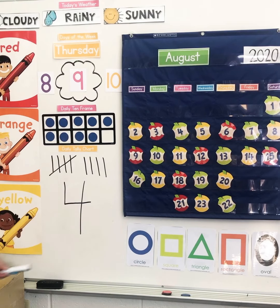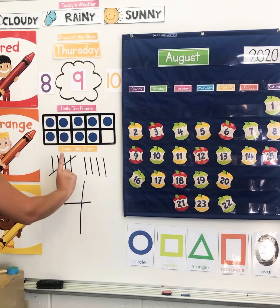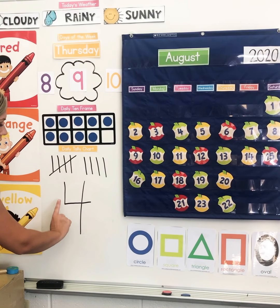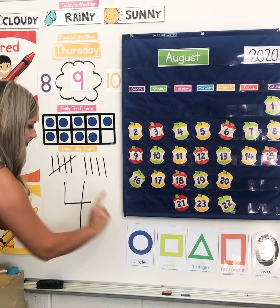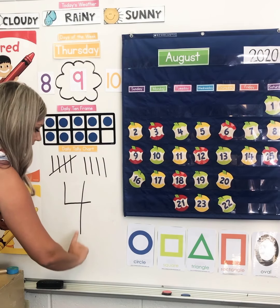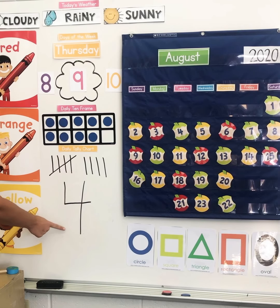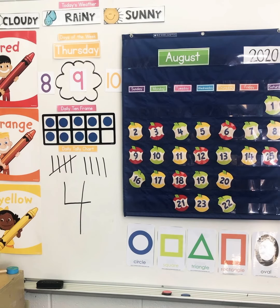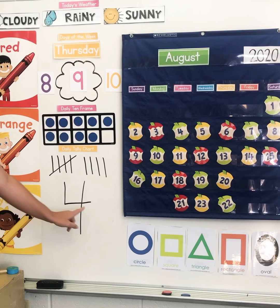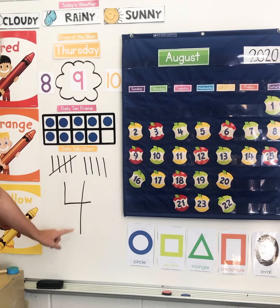Do that one more time. Down, across, then down some more. That's the way to make a 4. Today in Seesaw, you're going to practice making the number 4.